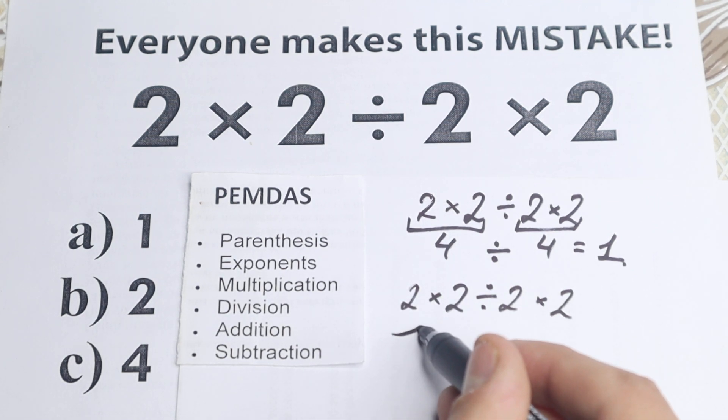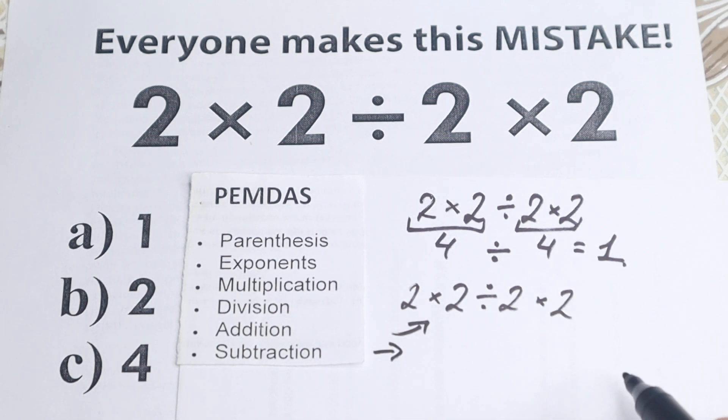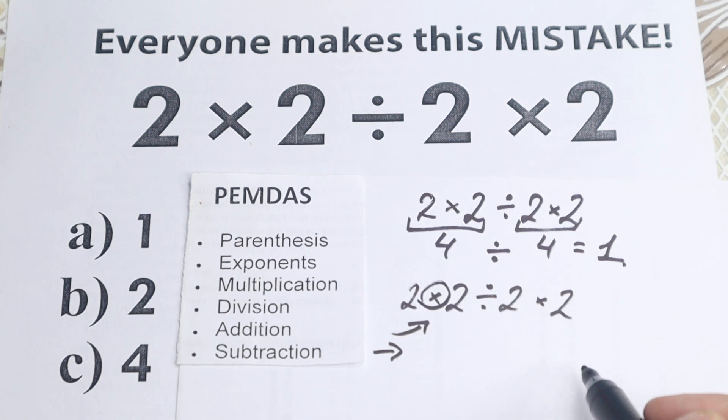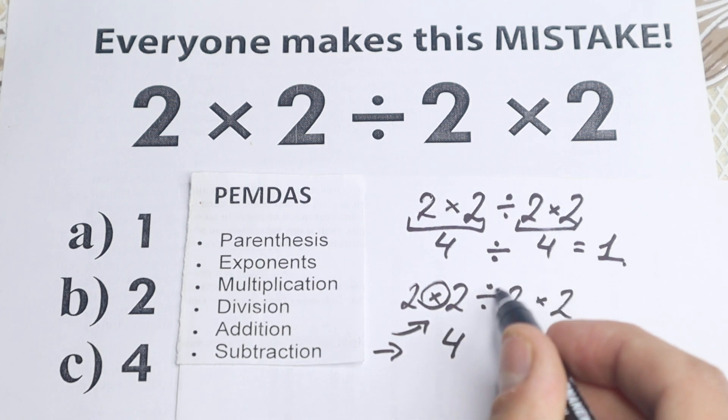We need to look, we need to scan what is the first sign if you're talking from left to right. What is the first sign from left to right? The first sign from left to right is this multiplication. So we need to multiply at first. Okay, we have 2 times 2 equal to 4.